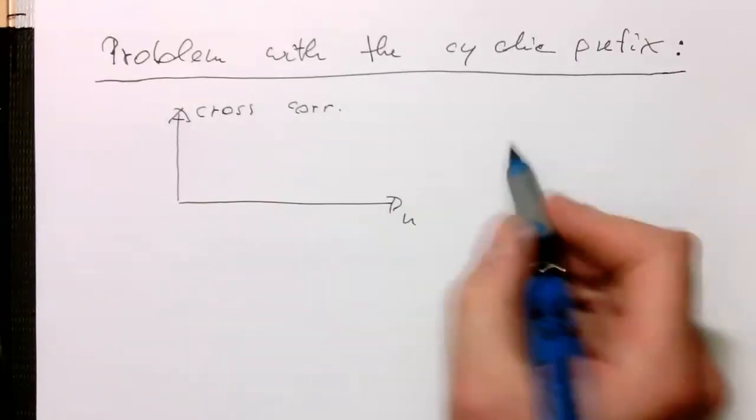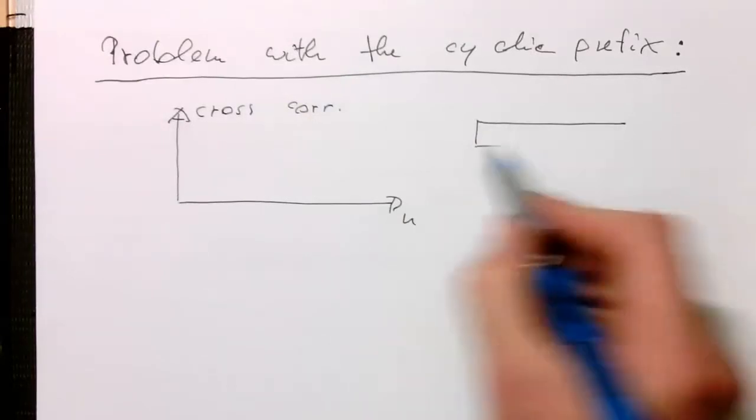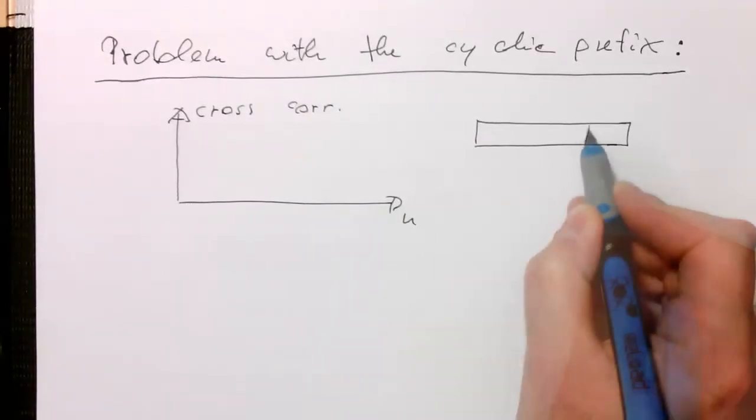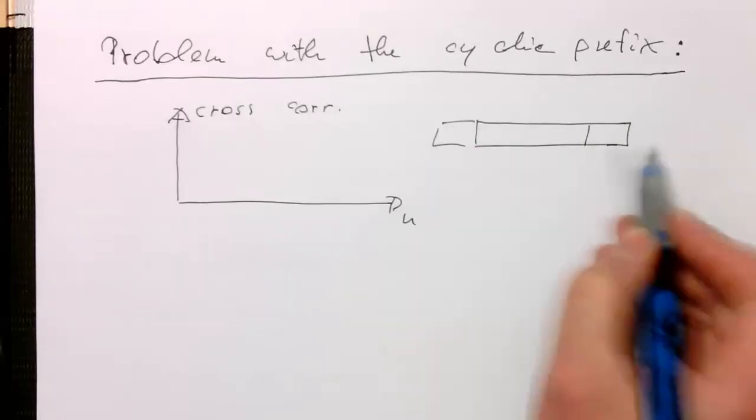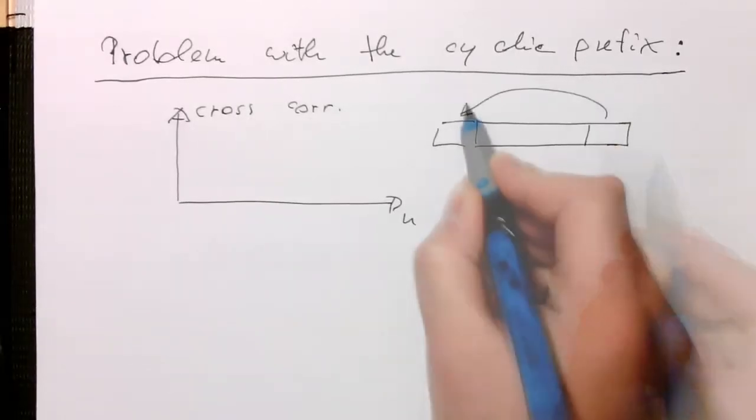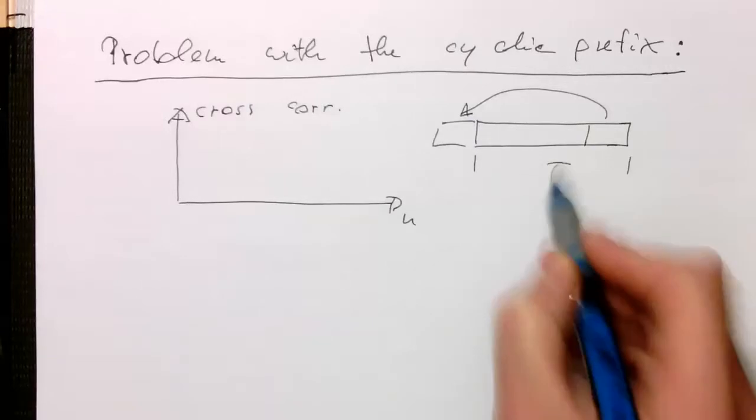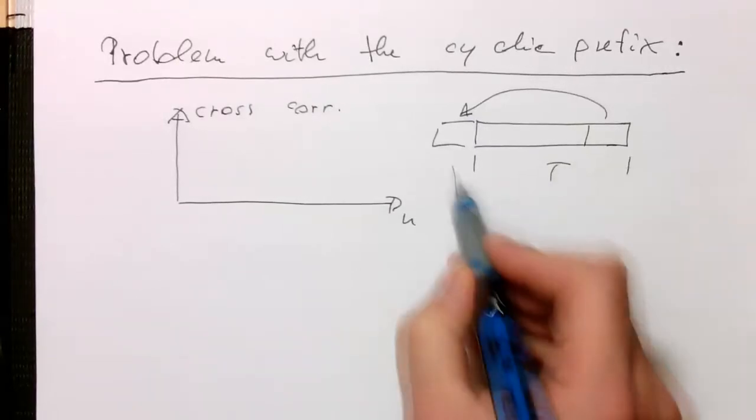So what we do is this is our symbol, and we copy this here to the front. So that's our symbol length T, and this is here our prefix.